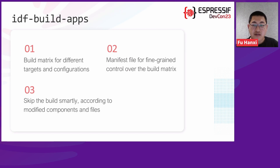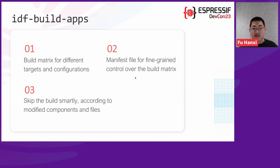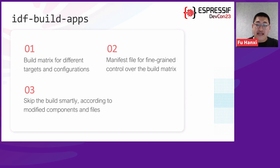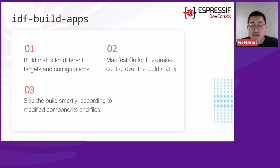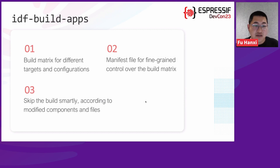The key features of IDF BuildApps are: first, it generates a build matrix as shown in the previous graph. Second, it provides a manifest file for fine-grained control over the build matrix. In some use cases, certain configurations can only be applied to a specific set of targets — for example, there's no need to test ESP32-H2 with Wi-Fi test apps since ESP32-H2 doesn't even support Wi-Fi. This saves both CI resources and developer time. Third, this tool also supports skipping builds intelligently according to modified components and files.